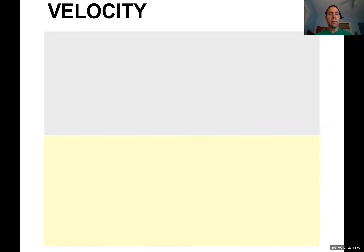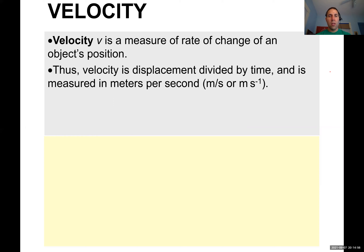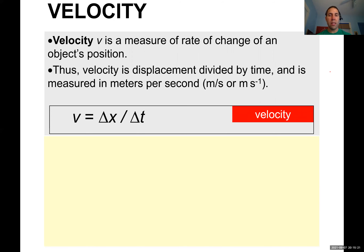Now let's talk about velocity. Velocity is a measure of the rate of change of an object's position — you take that quantity and divide it by time. The equation is: velocity equals delta x over delta t, or displacement divided by change in time, measured in meters per second. This addresses essential question two: velocity is the rate of change of displacement over time.